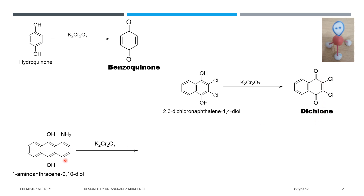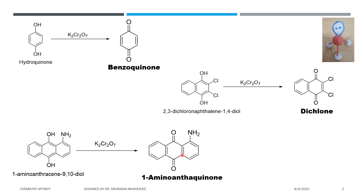This is an anthracene moiety. It contains 2 OH groups at the 9 and 10 positions. In presence of K₂Cr₂O₇ it oxidizes to a quinone type of molecule called anthraquinone.